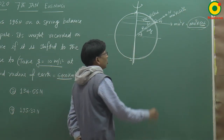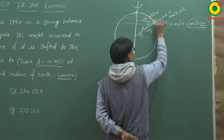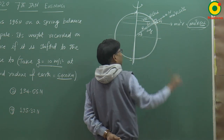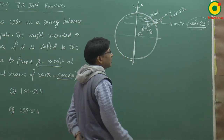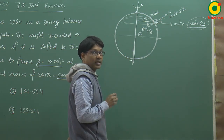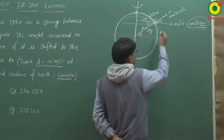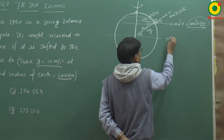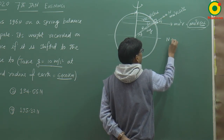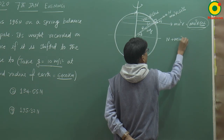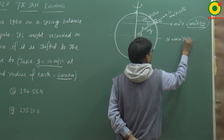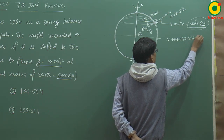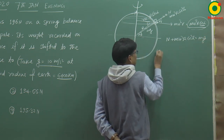चूंकि centrifugal force हम apply करते हैं उस observer के respect में जो object के साथ घूम रहा है, तो equilibrium में: N + mω²R·cos²α = mg।